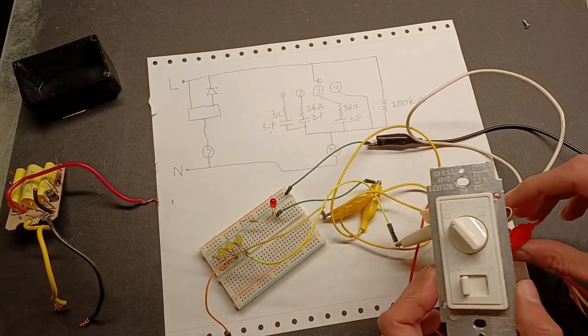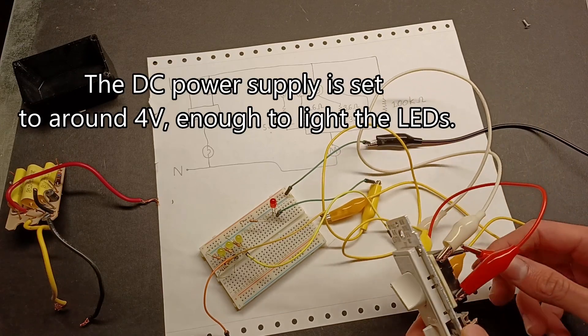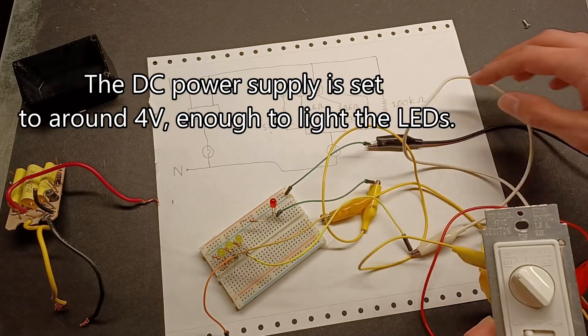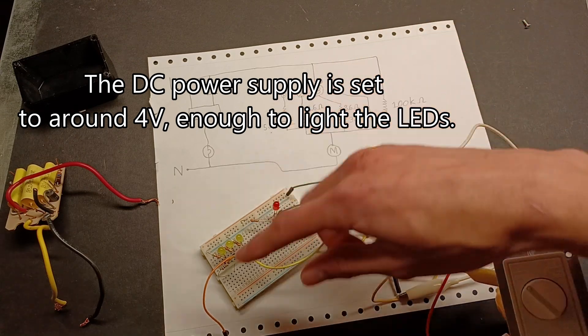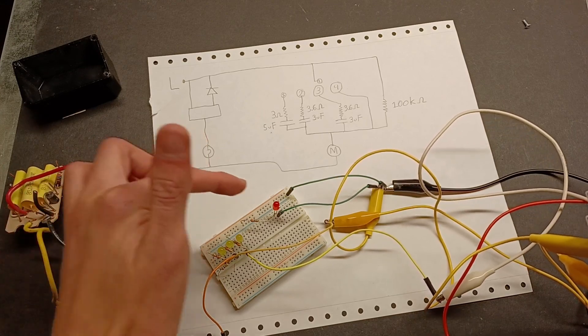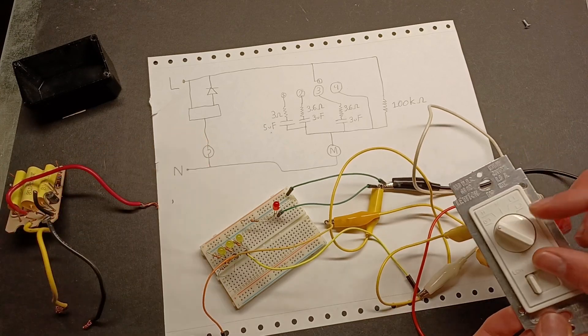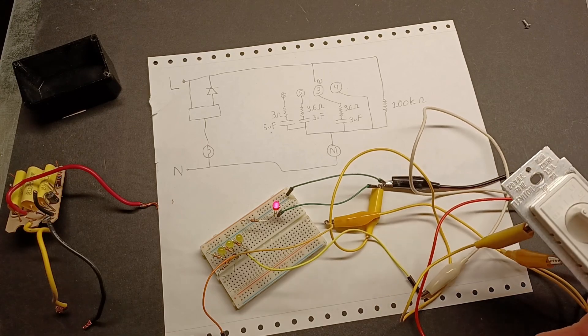So I've set up this little experiment where I've connected wires to the switch's terminals. Power from the bench power supply is connected to the L terminal of the switch. And terminals 1, 2, 3, and 4 are connected to these LEDs. These three LEDs are connected to terminals 1, 2, and 3, and the red one is connected to 4. If I turn the switch to high, only terminal 4 gets powered.